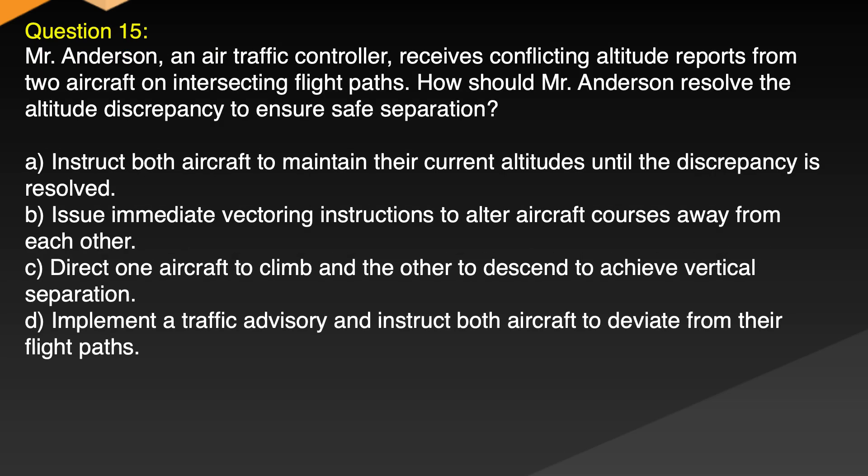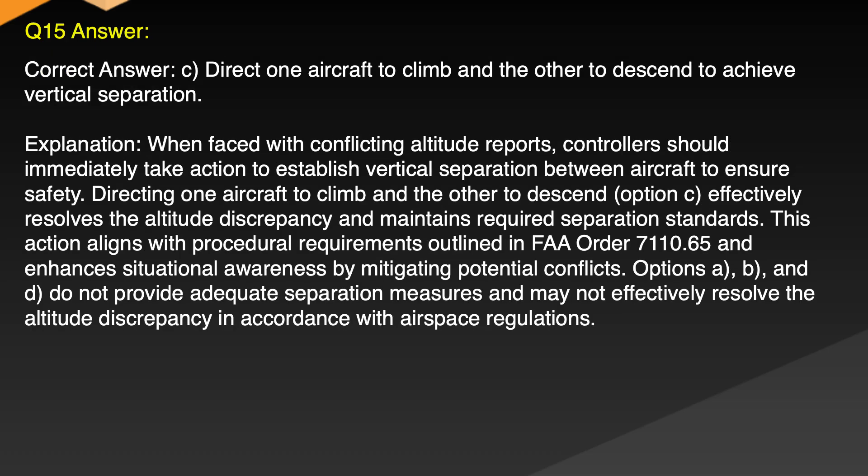Question 15. Mr. Anderson, an air traffic controller, receives conflicting altitude reports from two aircraft on intersecting flight paths. How should Mr. Anderson resolve the altitude discrepancy to ensure safe separation? A. Instruct both aircraft to maintain their current altitudes until the discrepancy is resolved. B. Issue immediate vectoring instructions to alter aircraft courses away from each other. C. Direct one aircraft to climb and the other to descend to achieve vertical separation. D. Implement a traffic advisory and instruct both aircraft to deviate from their flight paths. Correct answer: C. Direct one aircraft to climb and the other to descend to achieve vertical separation.